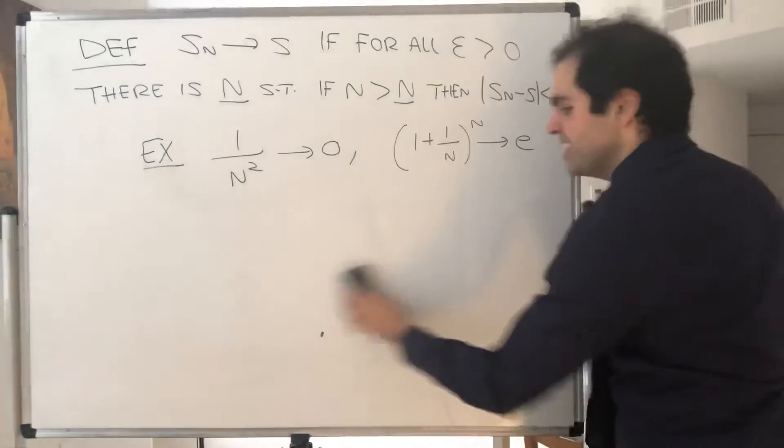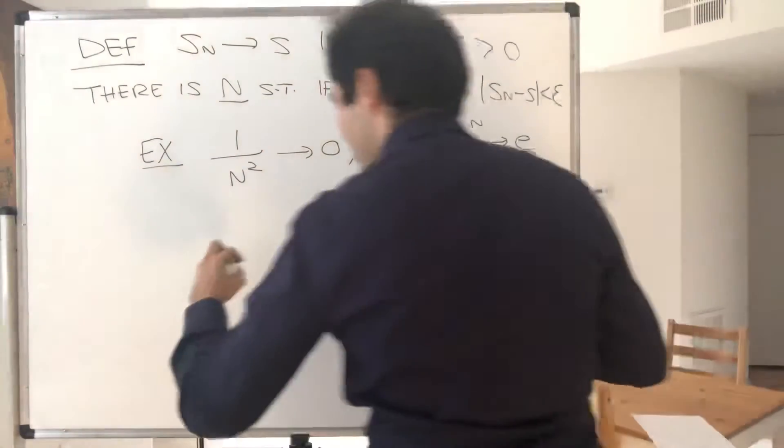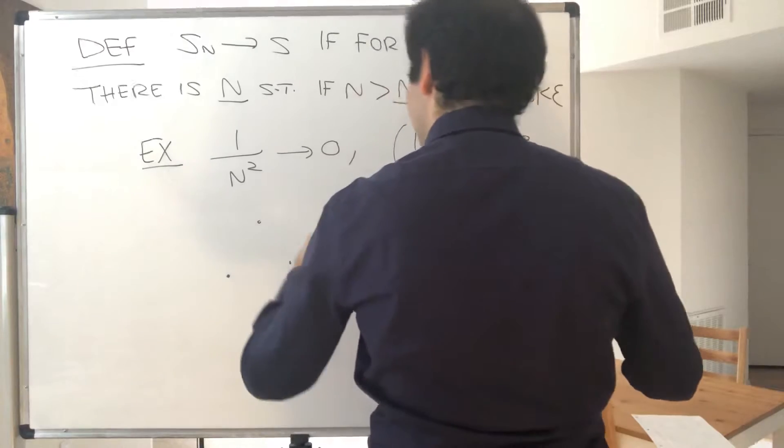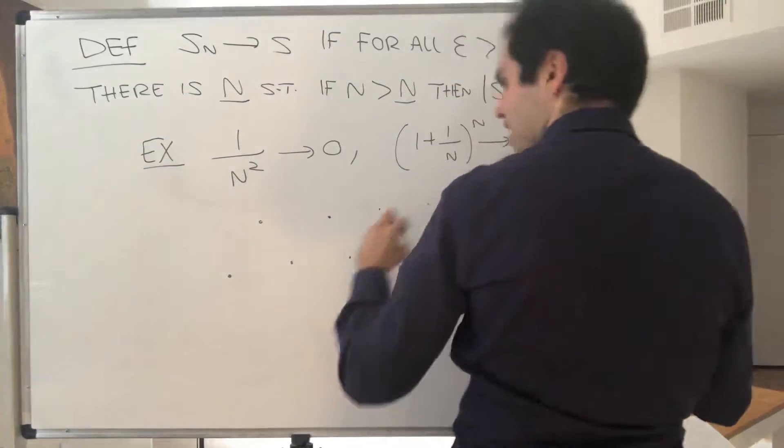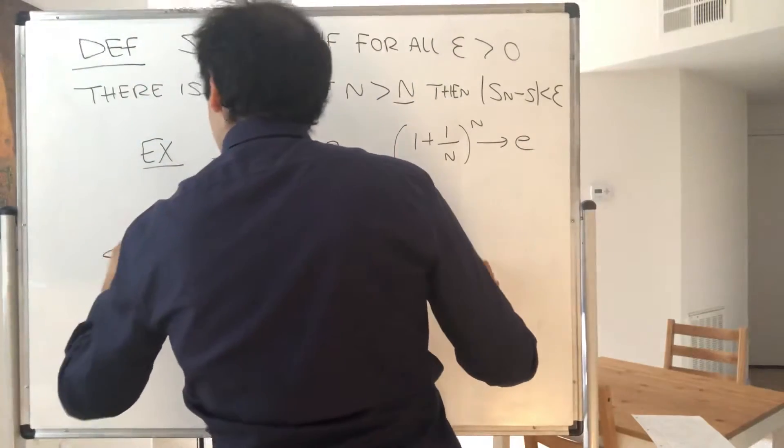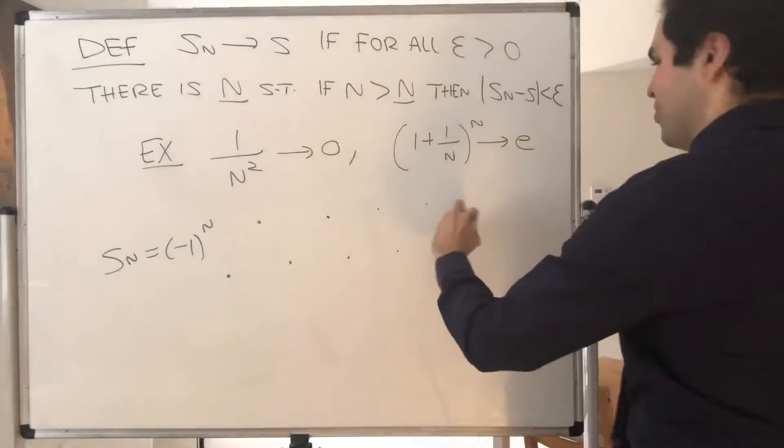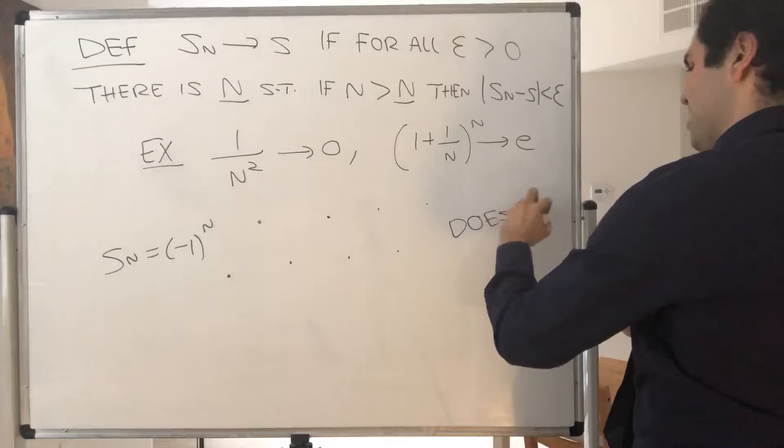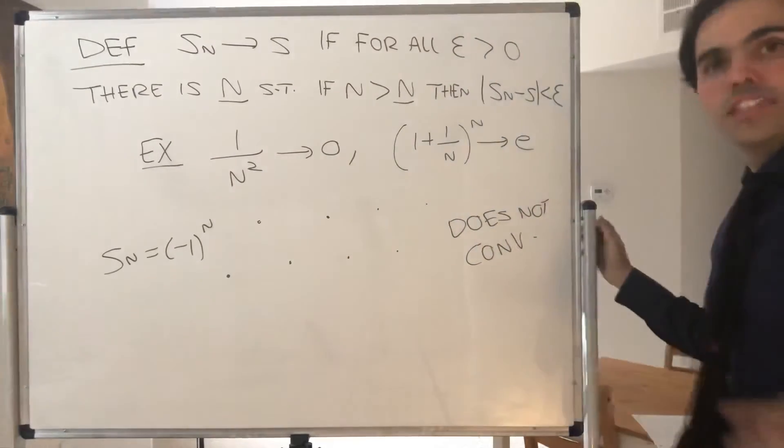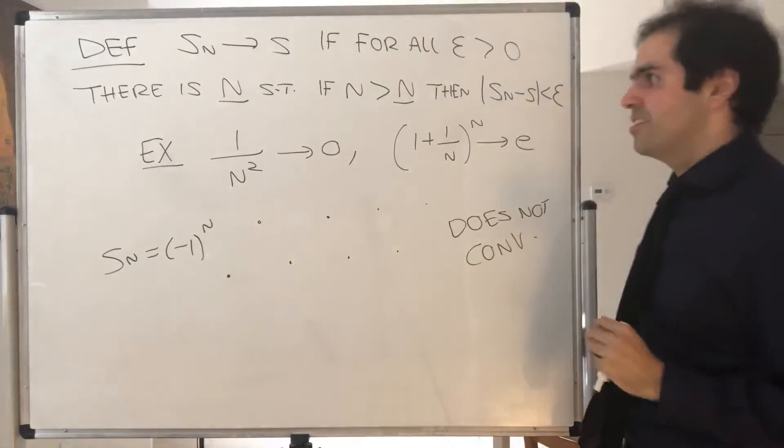However, the important thing to notice is not every sequence converges. For instance, minus 1 to the N is a pesky sequence which does not converge, and sometimes the sequence can go to infinity.